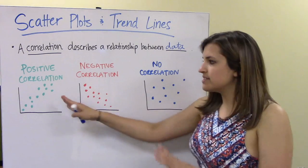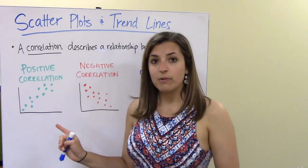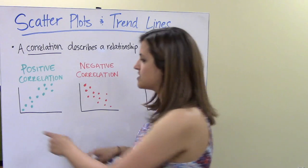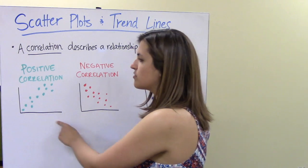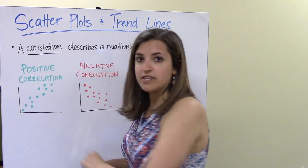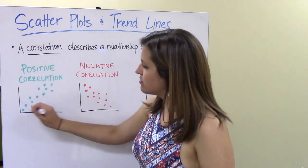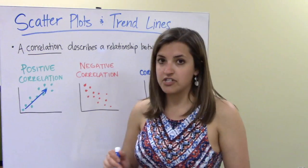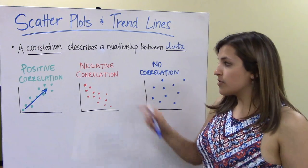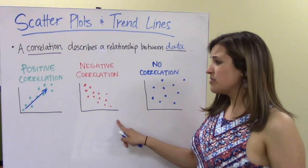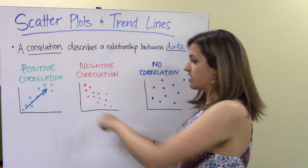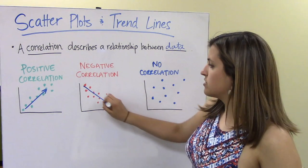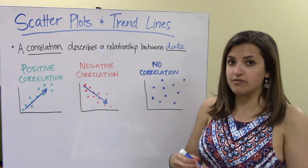With positive correlation, we might see a scatter plot where both variables are moving upwards — as x increases, y increases, and you see this sort of moving up in a general direction. With negative correlation, as x increases, y is decreasing, so we see this sort of downward shift — that's a negative correlation.